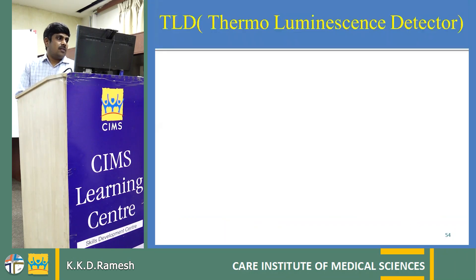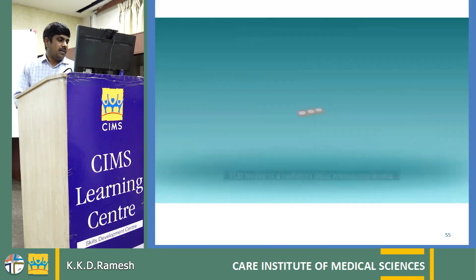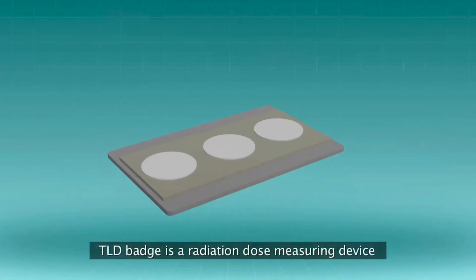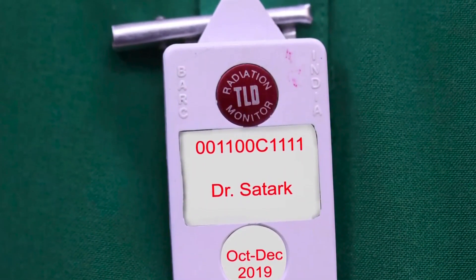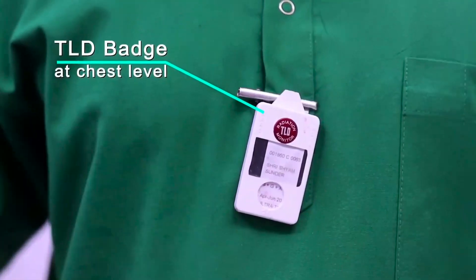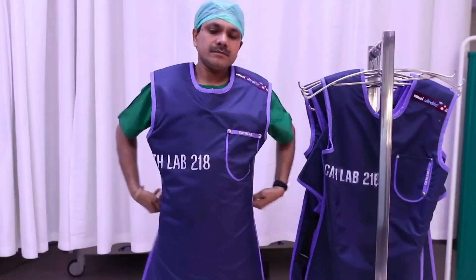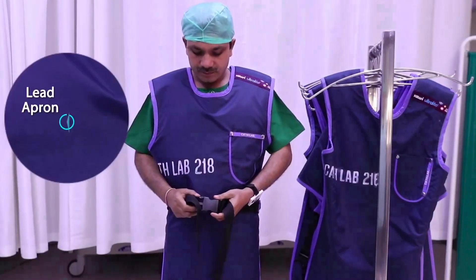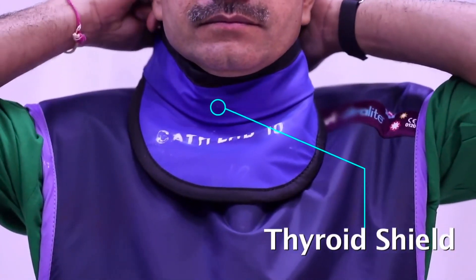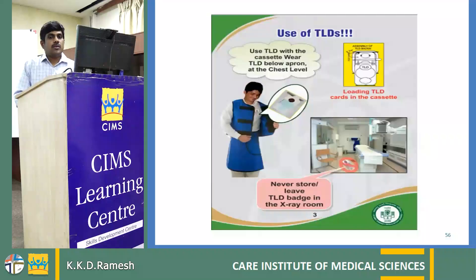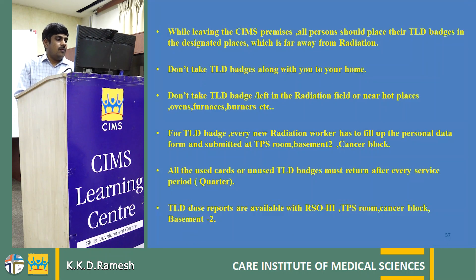Personal monitoring devices include the Thermoluminescent Dosimeter (TLD). A TLD badge is a radiation dose-measuring device that enables us to know whether we are working within dose limits. Always wear your own TLD badge at chest level. Above the badge, you must wear a lead apron, which attenuates X-rays and reduces radiation dose during imaging. For added safety, use thyroid shields and protective goggles. Do not leave your TLD in the X-ray room. All unused TLD badges must be returned after every service period. TLD dose reports are available with the RSO at Level 3, TPS Room, Cancer Block Basement 2. Thank you.